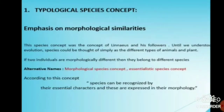Typological species concept. This concept emphasizes morphological similarities and was the concept of Linnaeus and his followers. Until we understood evolution, species could be thought of simply as the different types of animals and plants. If two individuals are morphologically different, then they belong to different species.